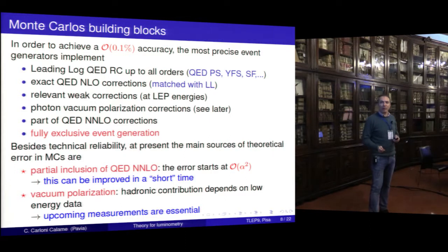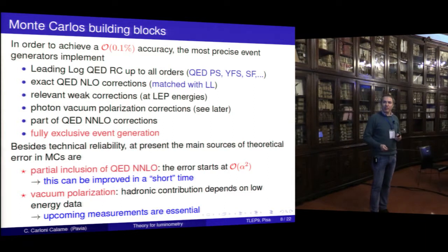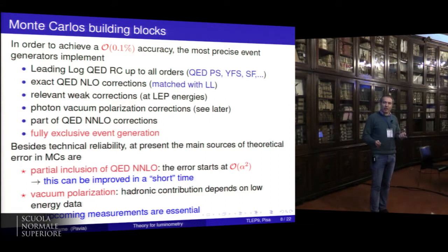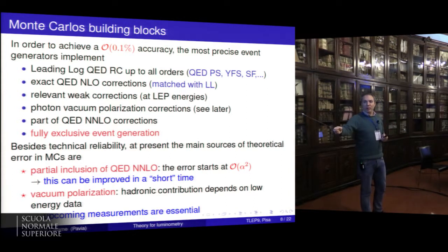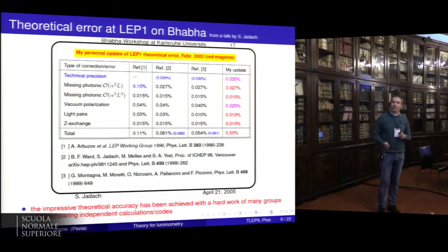I think this situation can be improved in a short time: the next-to-next-to-leading-order corrections now available can be included into the Monte Carlo. A big source of error at this level is the vacuum polarization parametrization — the hadronic contribution has an error driven by data, which can be a limiting factor. The upcoming measurements at low-energy machines in Novosibirsk, Beijing, and Frascati will be essential in order to reduce the error due to vacuum polarization.